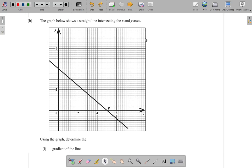Okay, we're back here. Now, question 4b, part 1 says, the graph below shows a straight line intersecting the x and y-axis. Using the graph, determine the gradient of the line.